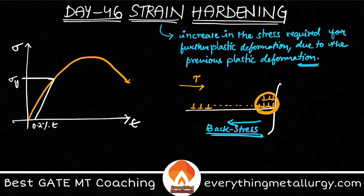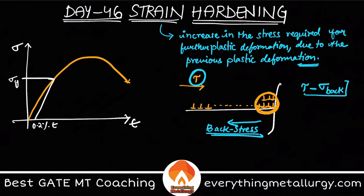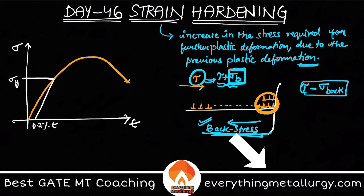Now, if you apply tau on the already deformed material — the same stress as before — will it be able to deform? Definitely no. Because the net amount of stress applied on the body is tau minus the back stress (σ_back). That is basically my opposing force. So now you have to give more than the total stress; the applied stress must be tau plus σ_b. You have to increase your applied stress by an amount equal to the back stress generated, so those two cancel out and the net stress helps dislocation motion. If the stress is not increased by the back stress amount, the effective stress will be less than tau.